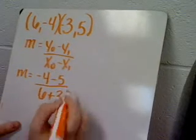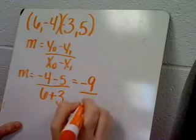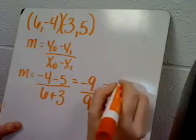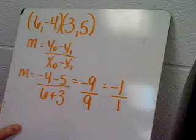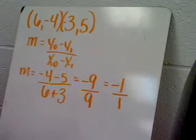So I'm going to go ahead and simplify this problem. Negative 4 minus 5 is negative 9, 6 plus 3 is 9, and this will reduce to negative 1 over 1. So this is a ratio telling us the line is negative.